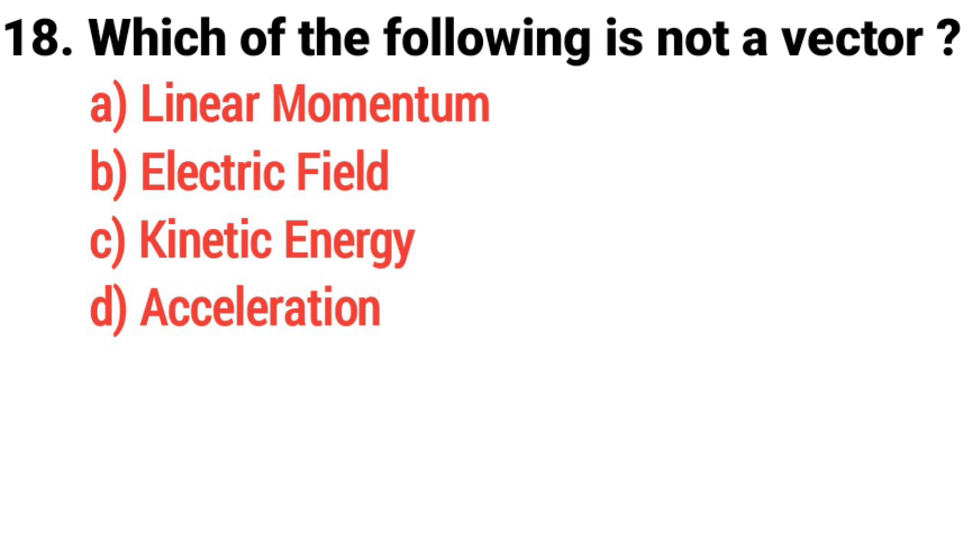Question number 18. Which of the following is not a vector? Answer: Option C, Kinetic energy.